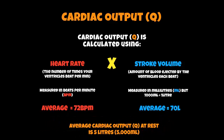Therefore, because we're multiplying heart rate times stroke volume — so it would be 72 beats per minute times 70 millilitres — the average cardiac output, or Q, at rest is 5,000 millilitres or, as mentioned earlier, changing it to litres, 5 litres.